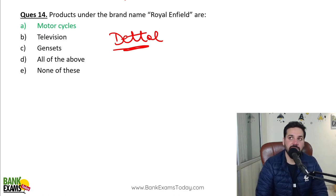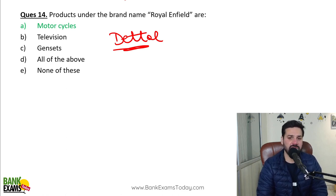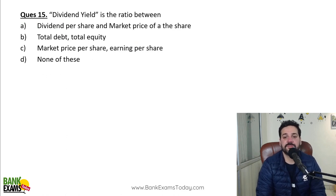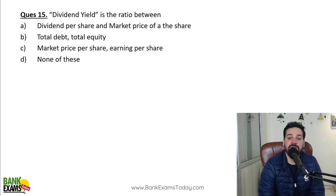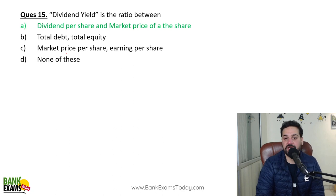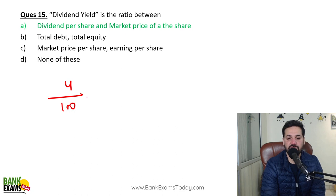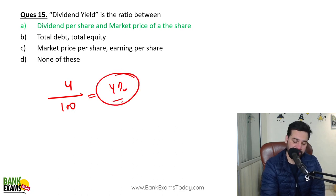Eicher Motors owns the Royal Enfield brand. Recently, Mahindra purchased Jawa Motorcycle, BSA and ESD brands, and they are selling those bikes in India now. A lot of UK brands have been bought by Indian companies. Dividend yield is a very important concept. Dividend per share divided by market price of the share is the dividend yield. For example, if a company gives 4 rupees in dividend and the market price of the share is 100 rupees, the dividend yield is 4%.